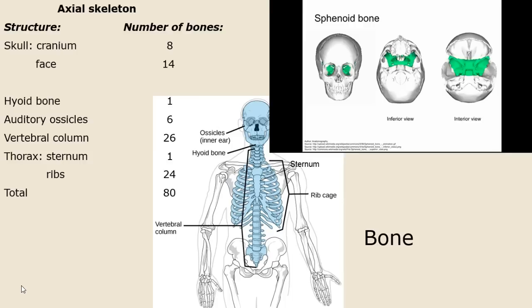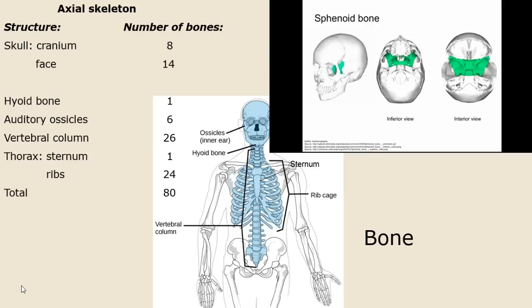The sphenoid is kind of a strange bone — I often think of Batman when I look at it. You can see it from different views here in green. It is sometimes called the keystone because it articulates — forms joints — with all the other bones in the skull: the parietal, temporal, occipital, they're all involved. There are two wings: the lesser wings and the greater wings form the large structures here.